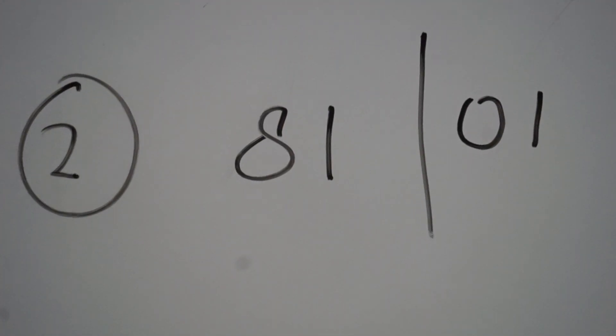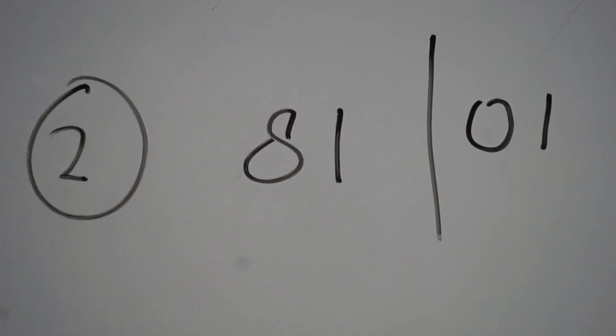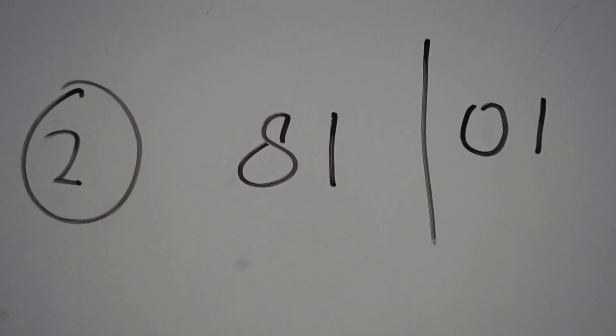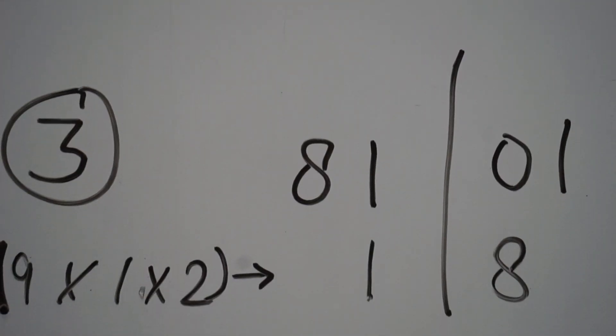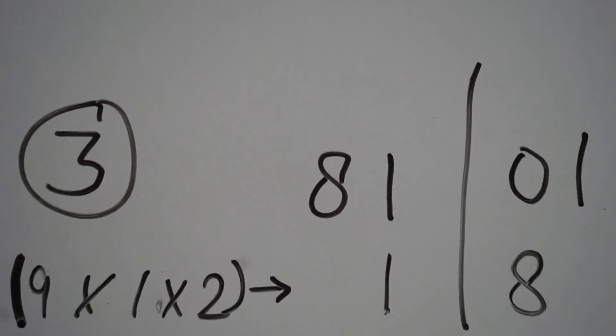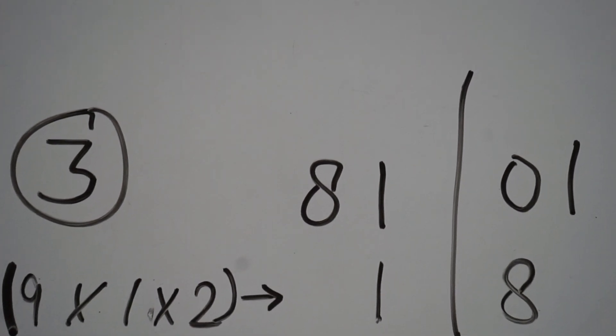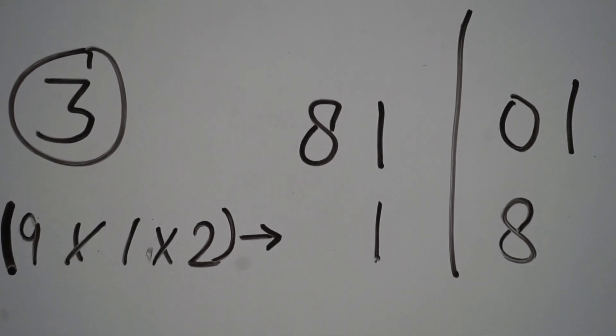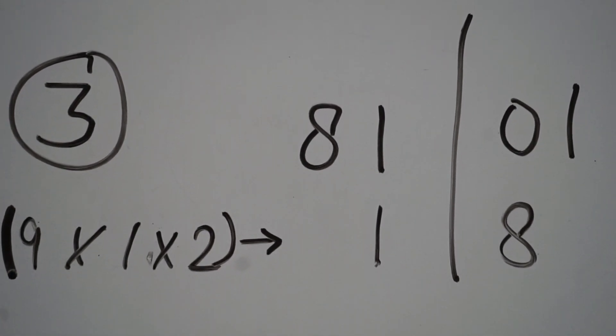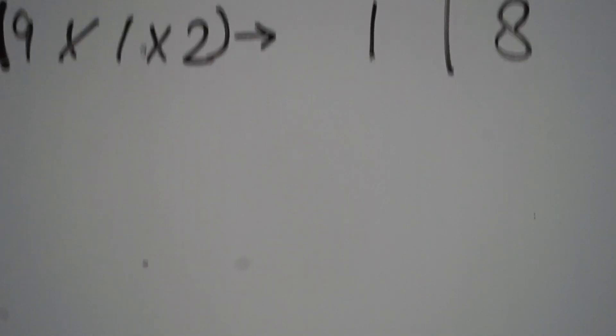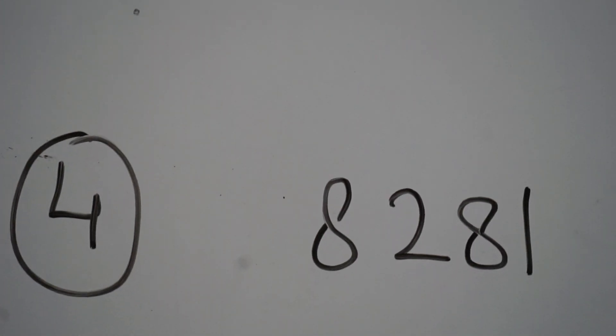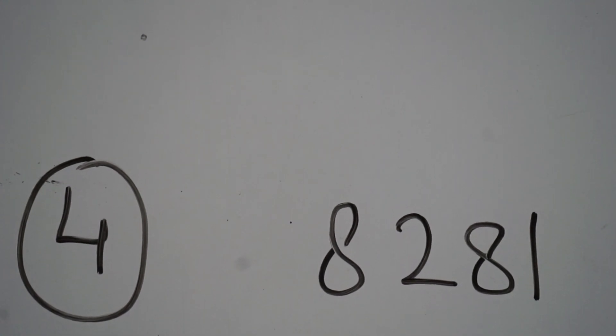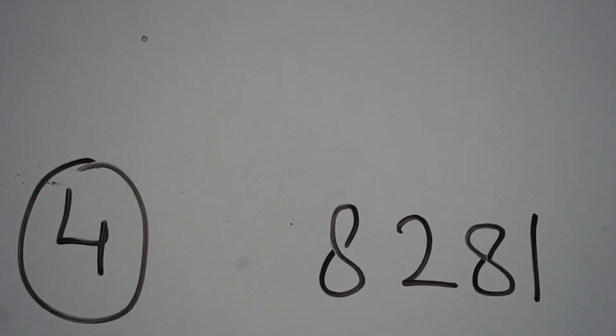Squaring both numbers: square of 9 is 81 and square of 1 is 1. Now we add the product of numbers multiplied by 2. So 9 into 1 into 2 is 18, which is written here. And after adding, we will get the square: square of 91 is 8281. Thank you friends, this is all.